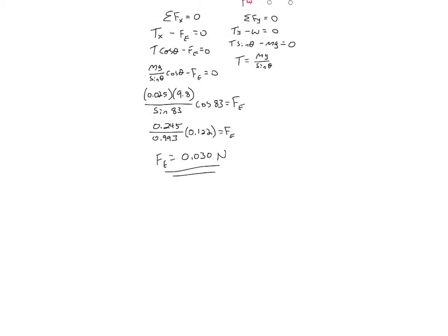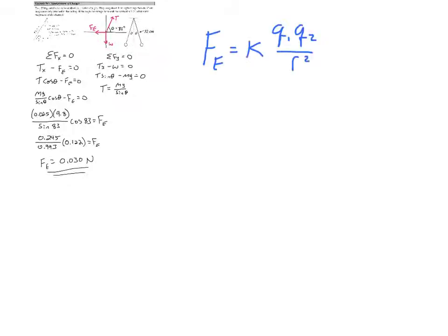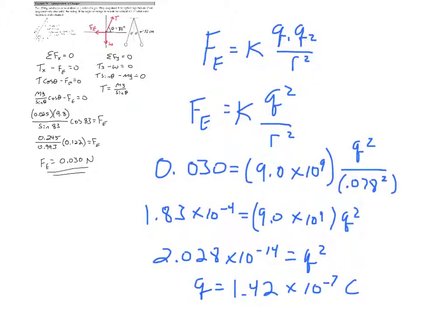We've used Newton's Laws to figure out the magnitude of the electric force. Now we can use Coulomb's Law to find the magnitude of the charge. Since both charges are equal, Coulomb's Law becomes kq² over r². Applying this, we end up with a charge of 1.42 times 10 to the negative 7 coulombs on each of the metal spheres.